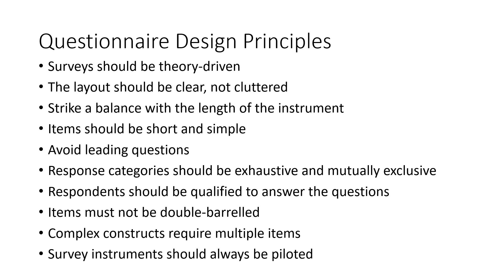Complex constructs often require multiple items. Instead of asking a single question to measure a variable, some constructs require multiple items that you can aggregate to get a better understanding. For example, job satisfaction could be measured with a single question — how satisfied are you with your job on a scale of one to five — but a better measurement would be a series of questions about different dimensions, such as satisfaction with autonomy, pay, and opportunities for training and development. Putting multiple items into a survey and aggregating them often yields better measurement.